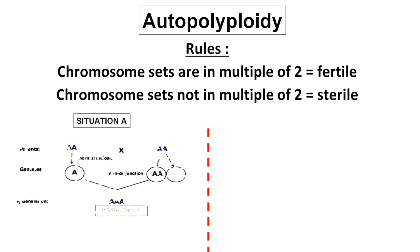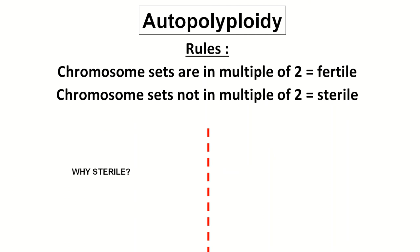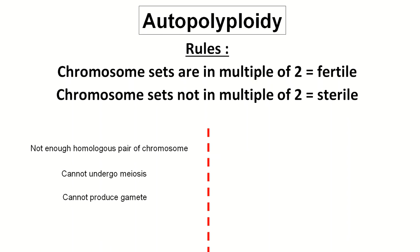Let's look at situation A. The F1 generation arises from the fusion between one normal gamete and one unreduced gamete, causing the F1 generation to be triploid — having three sets of chromosomes. Since three is not a multiple of two, the F1 generation will become sterile or infertile. This is because there are not enough homologous pairs of chromosomes, so that individual cannot undergo meiosis and therefore cannot produce gametes.